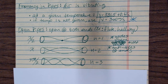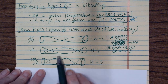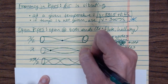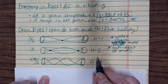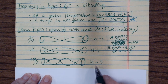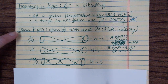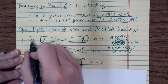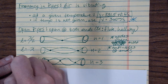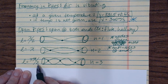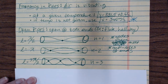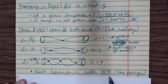For n=1 there is one node, meeting in one spot. For n=2 you have two nodes, so n equals 2. For n=3 you have three nodes, so n equals 3. The length relationships for open pipes are: L = λ/2 for n=1, L = λ for n=2, and L = 3λ/2 for n=3.